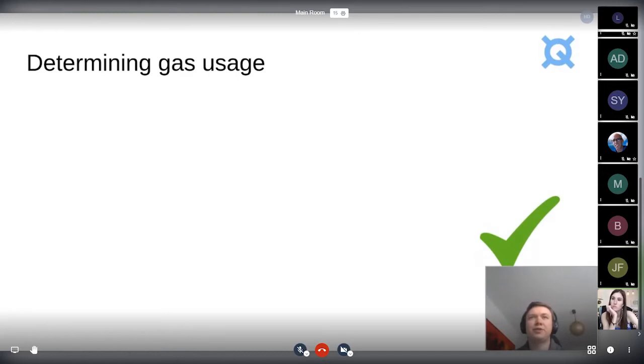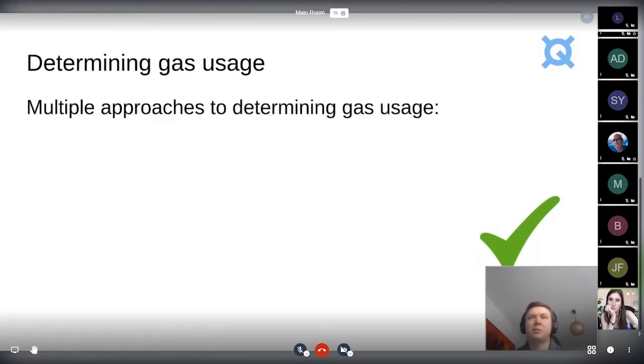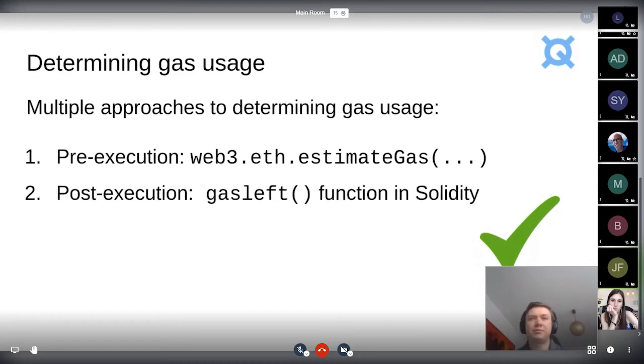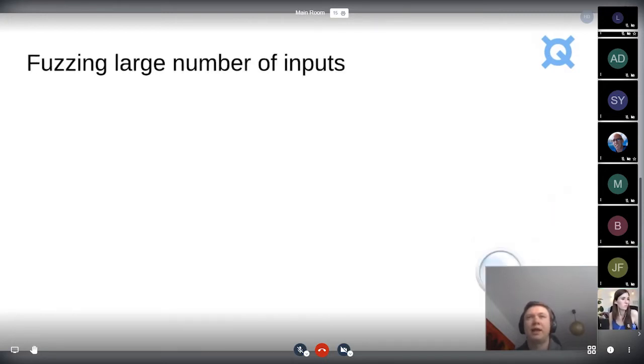So the first challenge is actually easy to solve due to Web3 and Solidity features. In our approach, we use the gas left function from Solidity. And we basically simulate everything on top of the Ganache network, the Ganache tool. And the second challenge is more, I'm going to talk more about that one. So fuzzing a large number of inputs is more tricky.